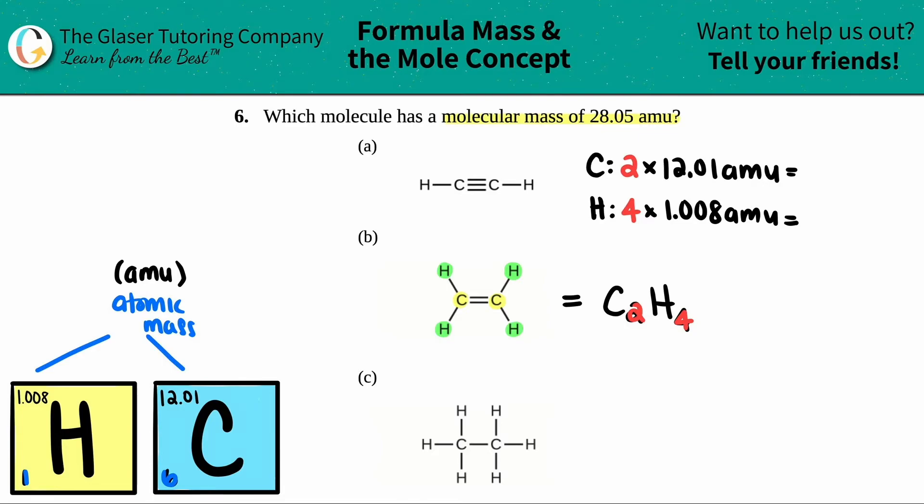Let's tally it up. So for the carbon, 2 times 12.01 is 24.02 amu. And then for the hydrogen, 4 times 1.008 is 4.032 amu. And now if we need to find the total molecular mass, what are we going to do with these two numbers? Yeah, we're going to add them up. So 24.02 plus 4.032, and I get 28.052 amu.